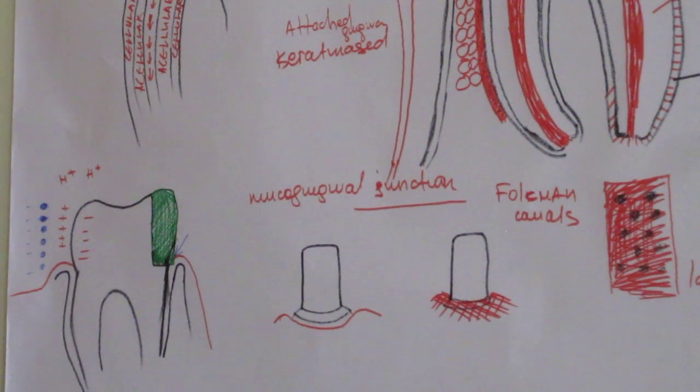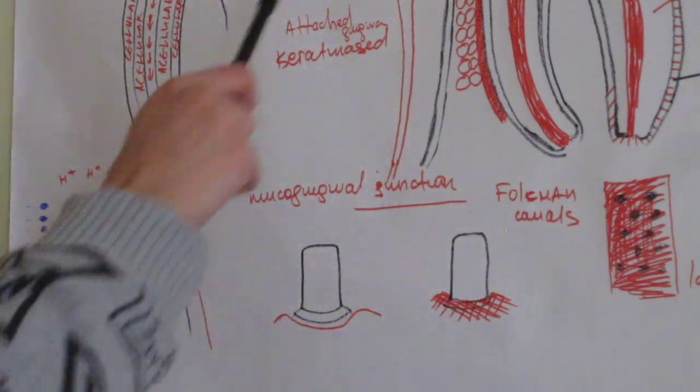The other iatrogenic factors are badly done bridges which don't reach the border of the gingiva, the free gingival margin.